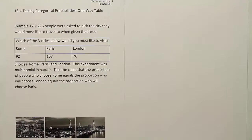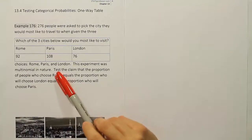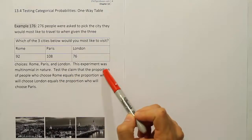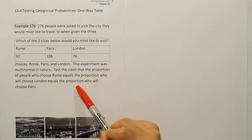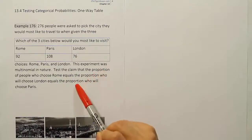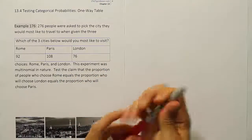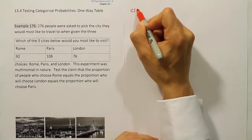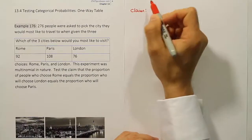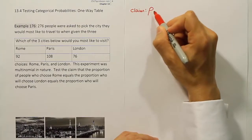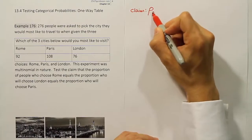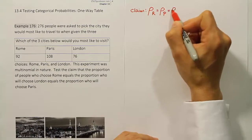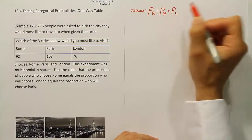In this problem they're asking us to test the hypothesis — you can see that because it says 'test the claim.' It's about proportions, and it looks like it's more than two proportions being compared. So we're going to start out by writing the claim. The claim is that the proportion of people who wish to go to Rome equals the proportion who wish to go to Paris equals the proportion who wish to go to London.